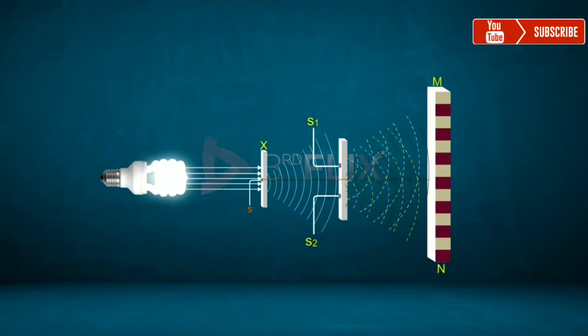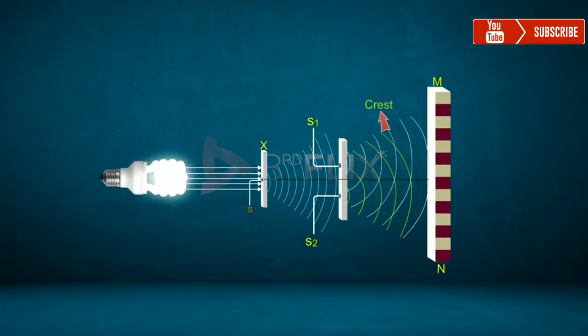Here, the dotted line represents troughs, and thick lines represent crests.